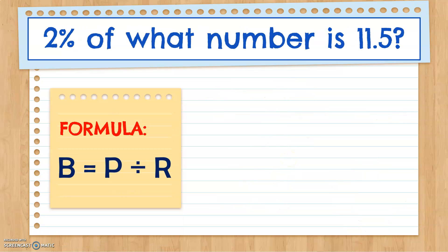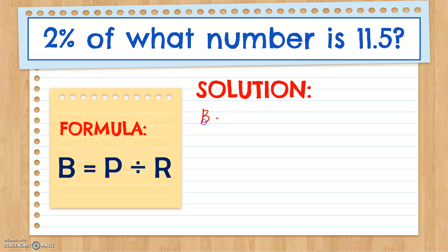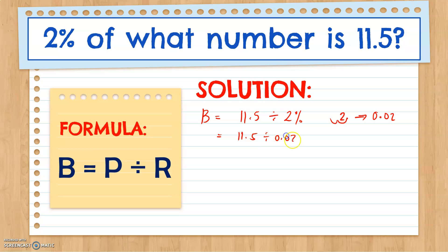Another example: 2% of what number is 11.5? To find the base, we use Base equals Percentage divided by Rate. Our percentage is 11.5 and our rate is 2%. Let's change 2% into a decimal by removing the percent symbol and moving the decimal point two times to the left. So 2% equals 0.02. Then we divide 11.5 by 0.02. Our new numbers, after moving the decimal point twice to the right in both divisor and dividend, are 1,150 divided by 2.